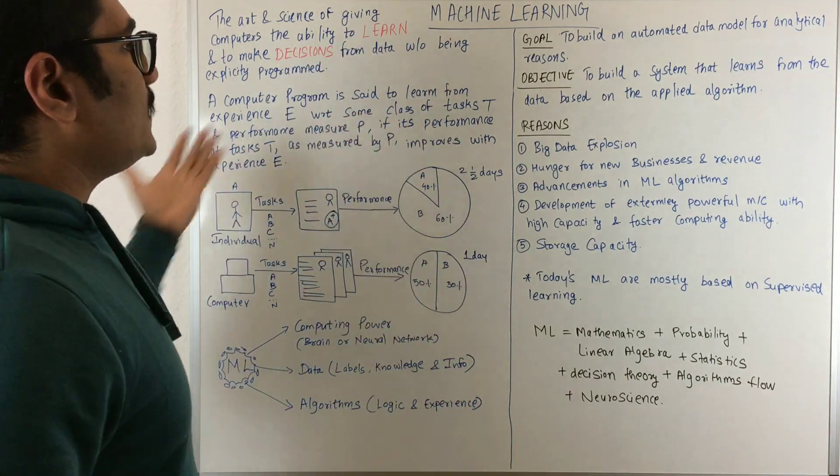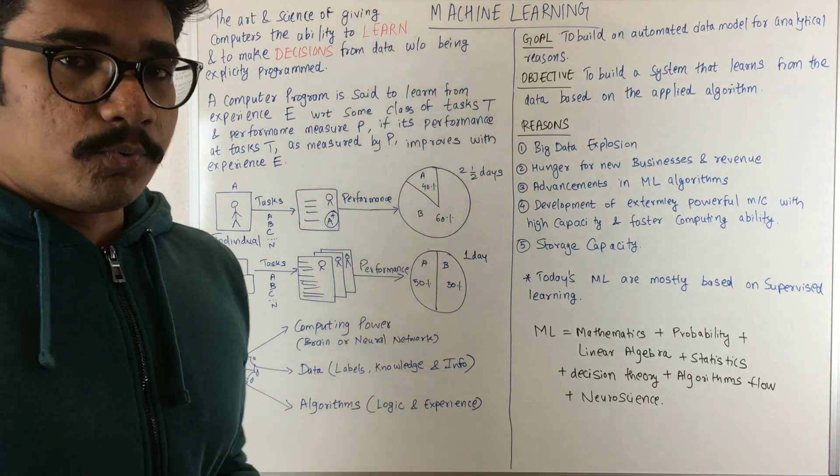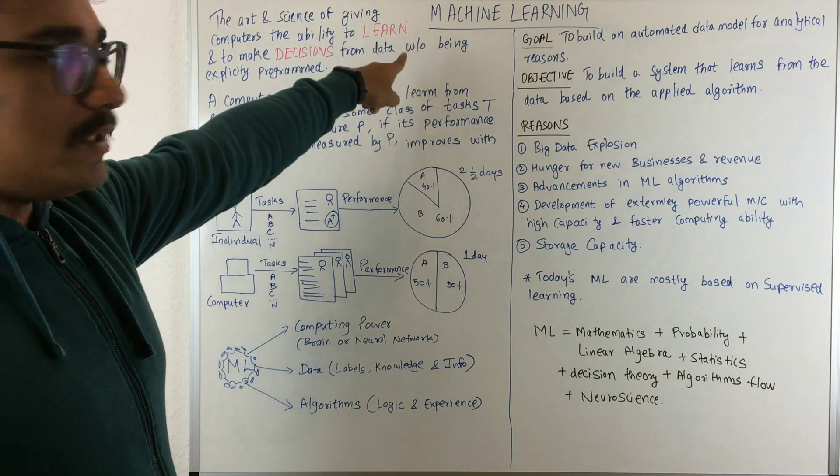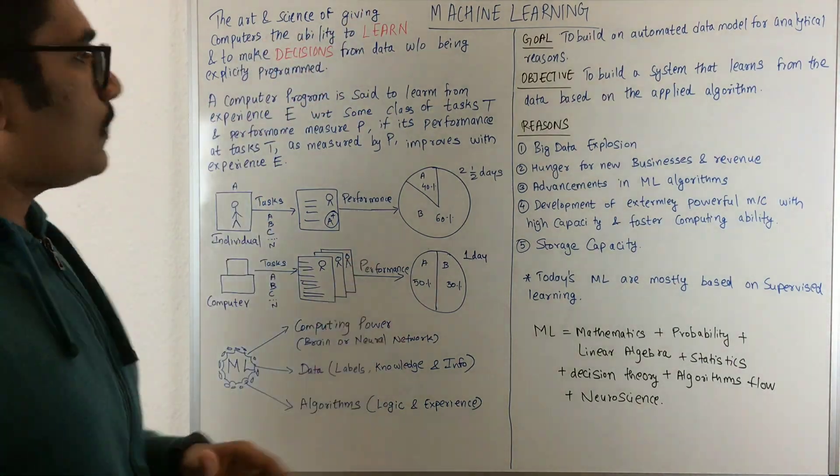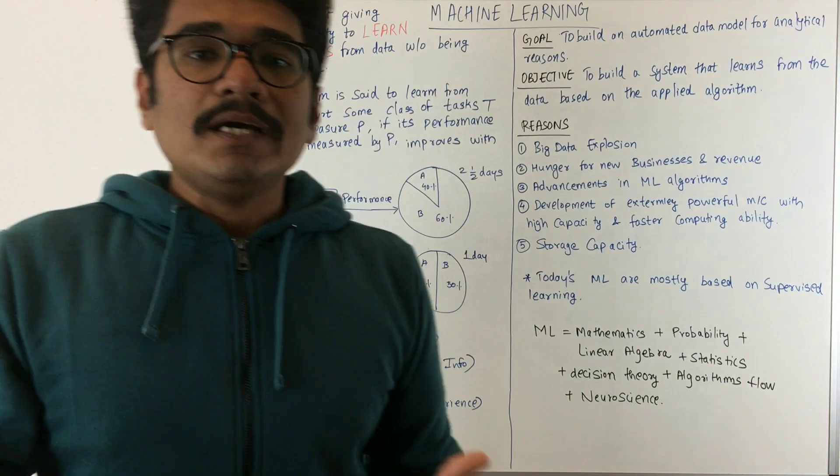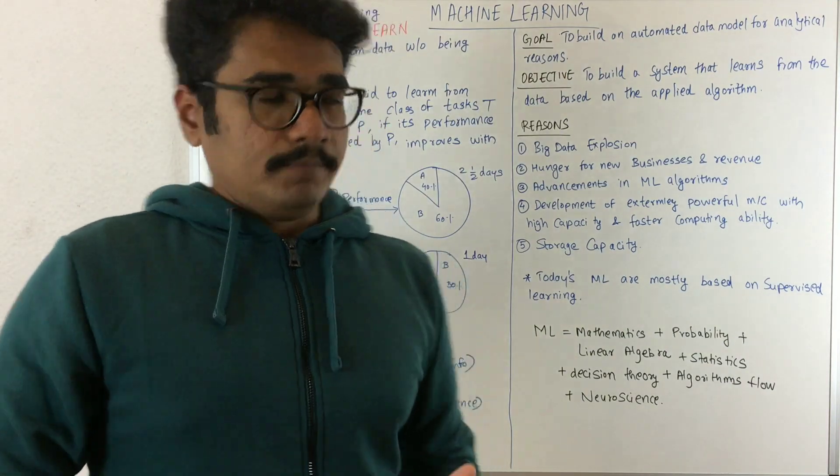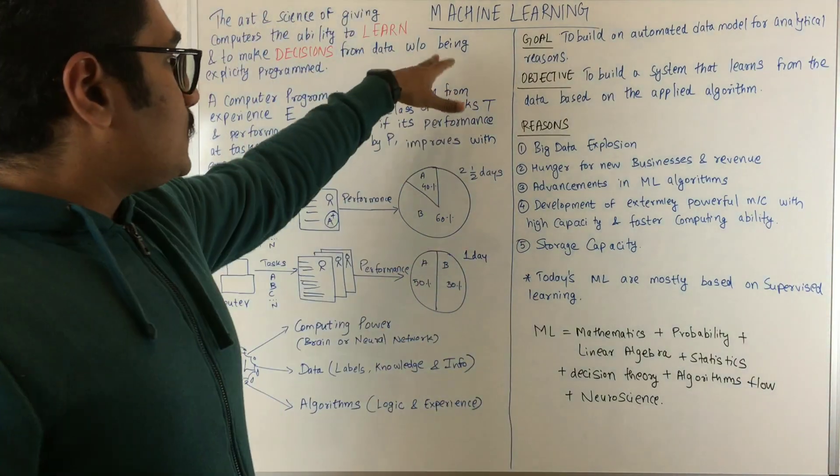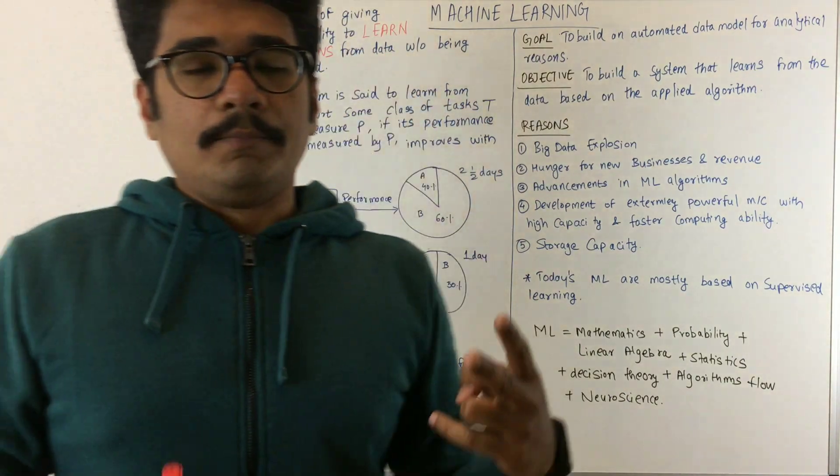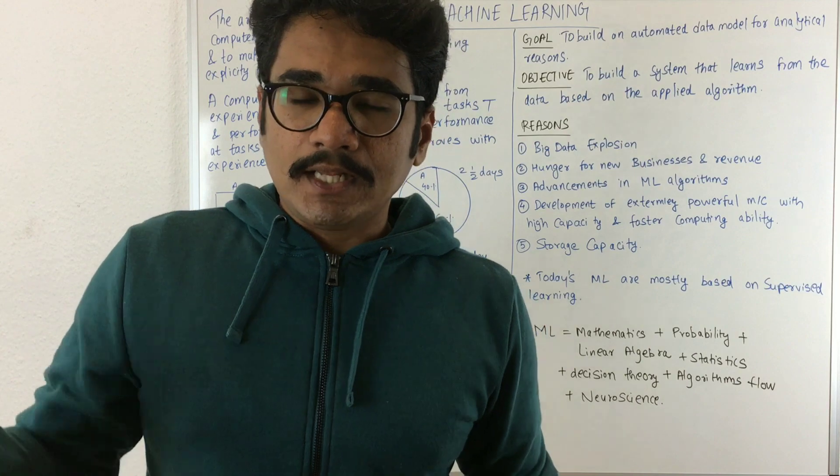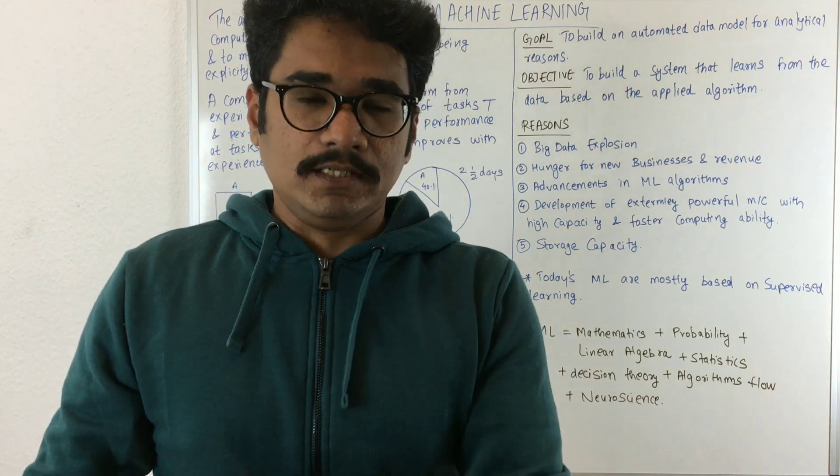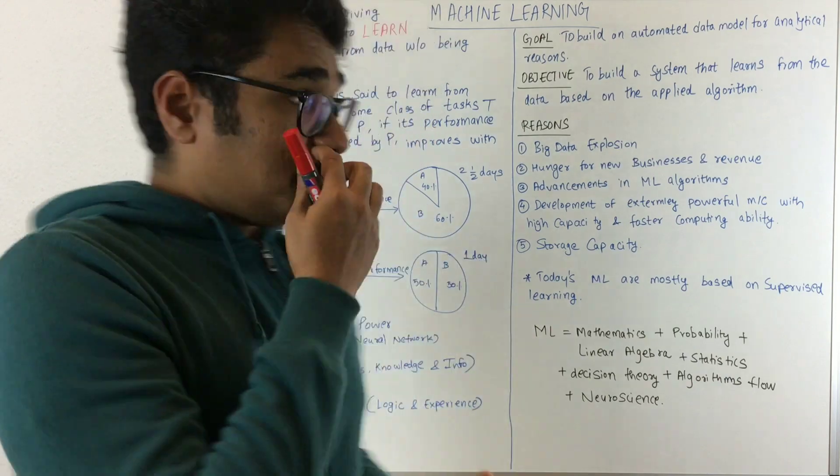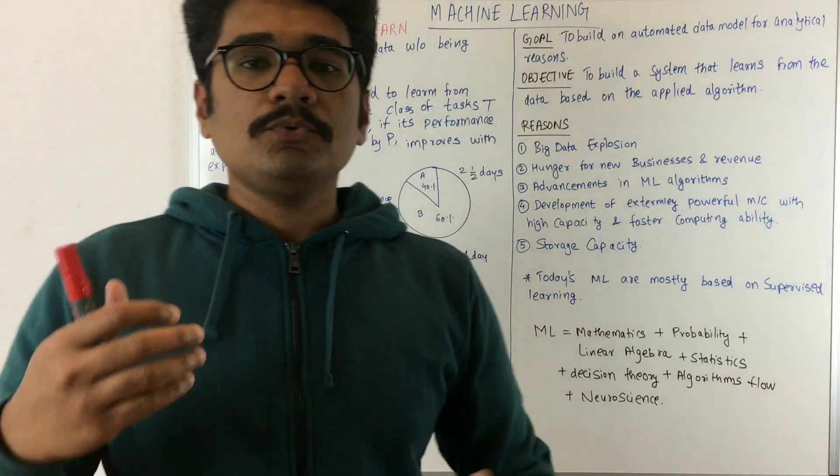Machine learning is the art and science of giving computers the ability to learn and make decisions from data without being explicitly programmed. You need to see the two terms: learn and decisions. You learn something from the data which is given, and from that data you make certain decisions. This is without being explicitly programmed, means someone will not tell you what to do.